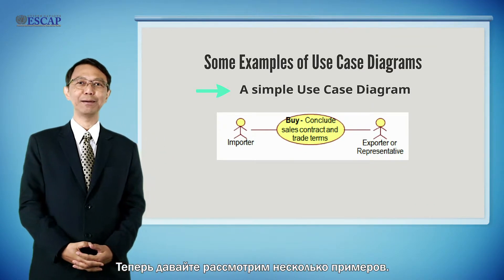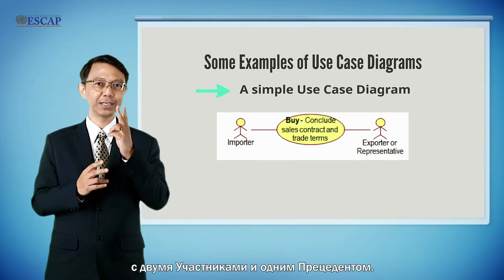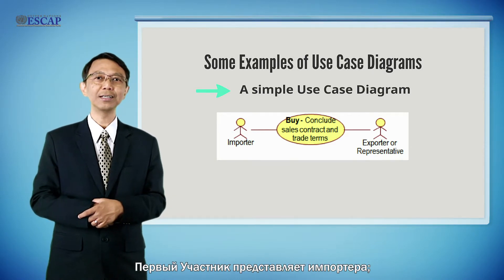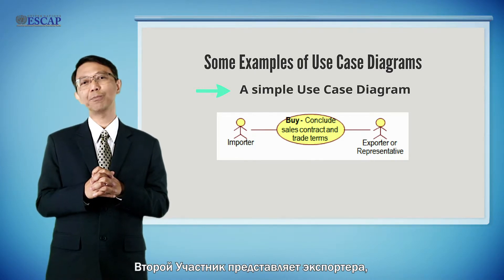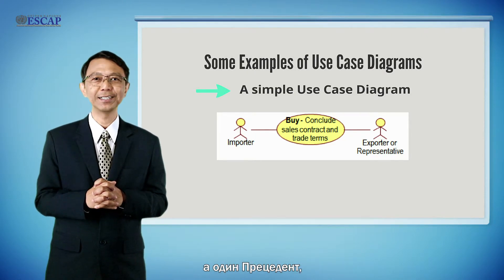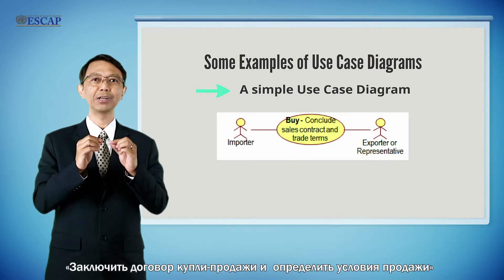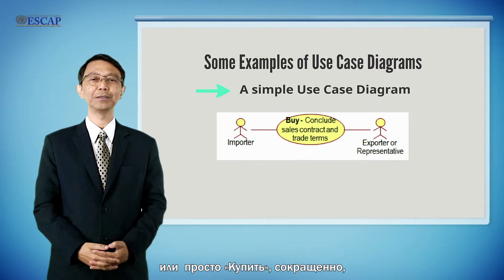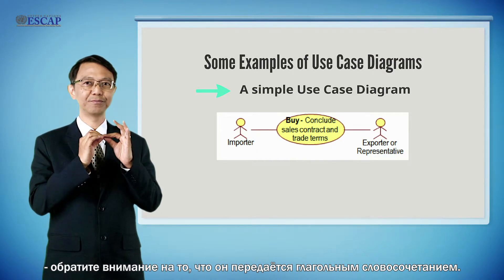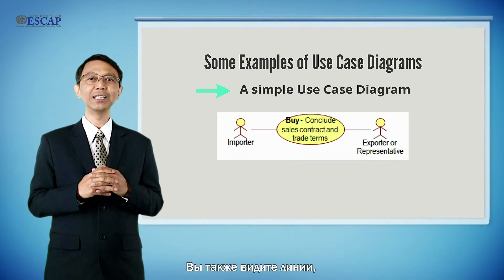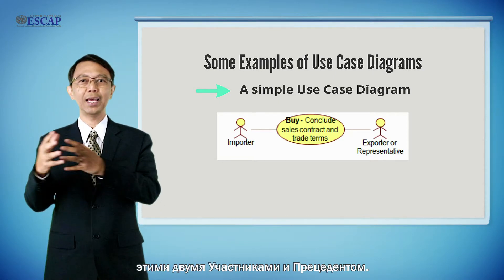Now let us see some case examples. This figure shows a simple use case diagram with just two actors and one use case. The first actor represents an importer, the second actor represents an exporter, and one use case called 'conclude sales contract and trade terms,' or 'buy' for short. Note that a use case is labeled with a verb phrase, and the lines represent association or involvement between these two actors and this use case.